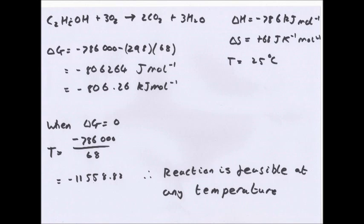Now this isn't a very good example for the feasibility question, but it works. When delta G equals zero, T equals minus 786,000 over 68. Now this ends up giving the temperature here would be negative, which you can't have. If you only have zero, it's the lowest. So it basically says this reaction is feasible at any temperature.